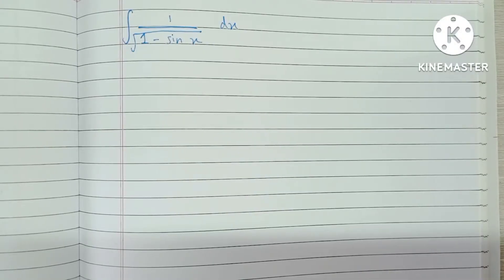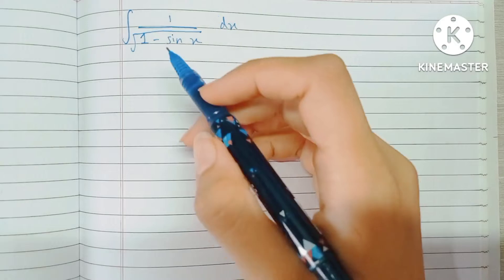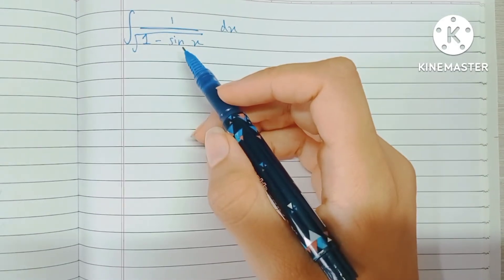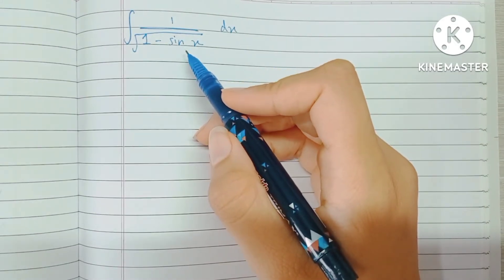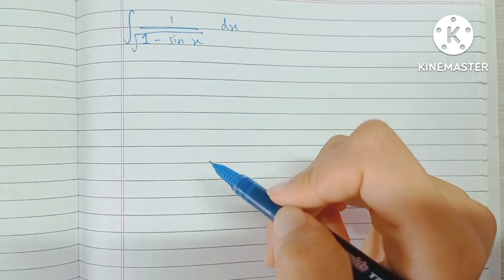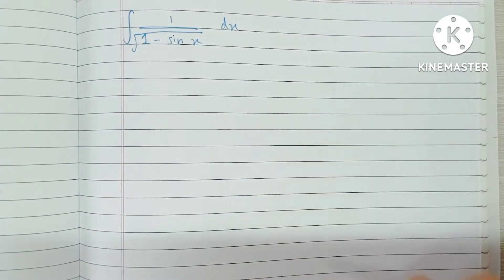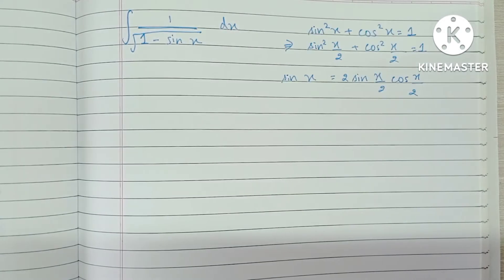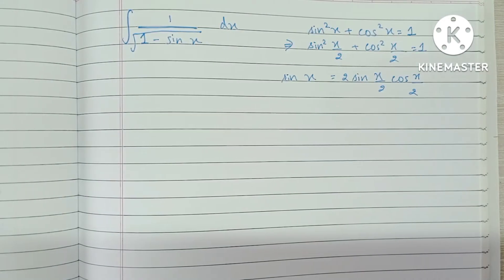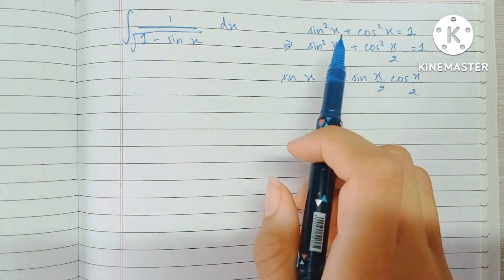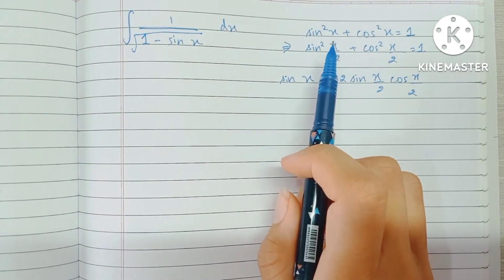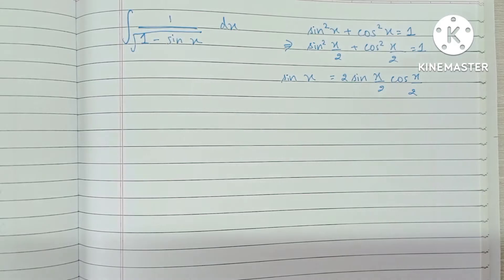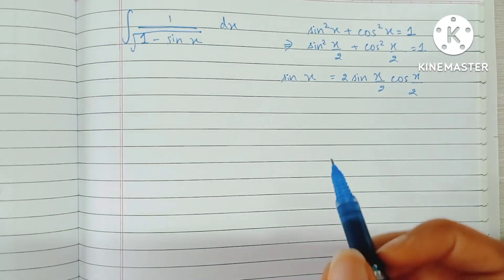Hey guys, today we'll be solving the integral of 1 upon root of (1 minus sine x) dx. We're going to be using two trigonometric identities — the half angle versions of those identities.